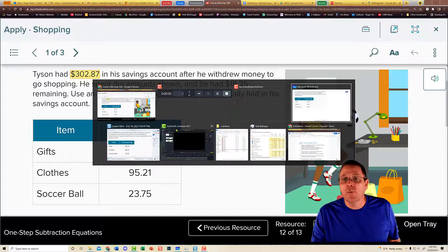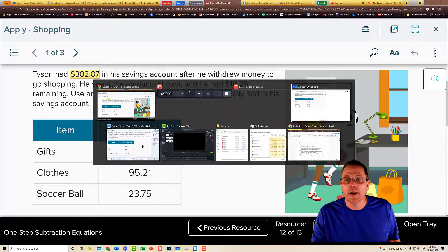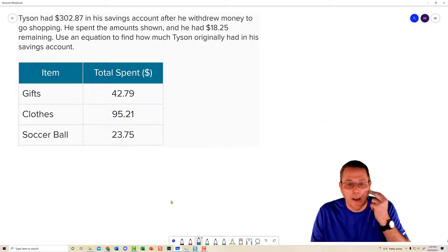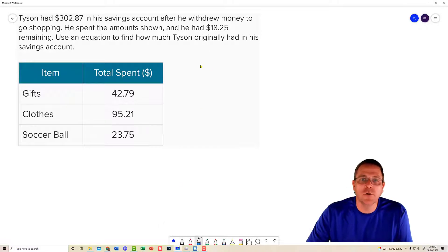First thing we're going to do is not worry a lick about that $302. That $302 is nothing but trouble for me right now. And instead, I'm going to work on finding out how much he had in his savings account. How much he withdrew from the savings account. So I'm going to take and do a W for withdrawal. And he withdrew a chunk of money.